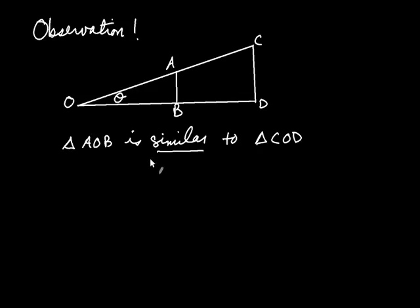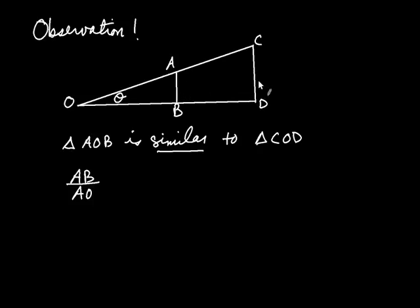The most important thing for us about two similar triangles — and this is really important in lots of applications of math — can be illustrated with the following observation. If you take the length AB and divide it by the length AO, it turns out that's the same as taking the corresponding side CD divided by CO. That's always true for similar triangles: the ratio of any two corresponding sides is the same.